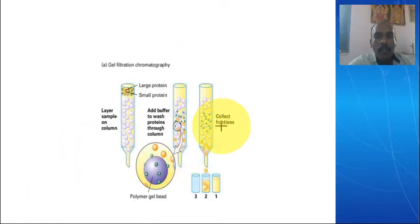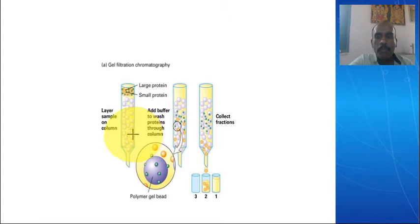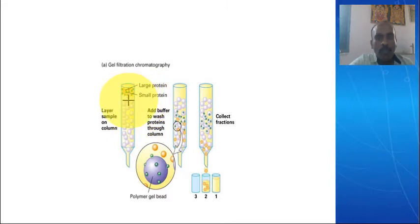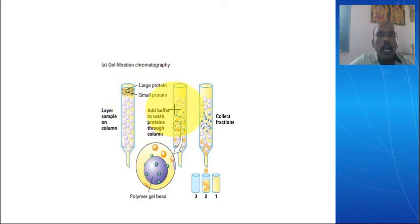When we observe this diagram, here is a column. In this column, gel particles are added. On top, the analyte substances are added and washed with a buffer. The buffer is the mobile phase.